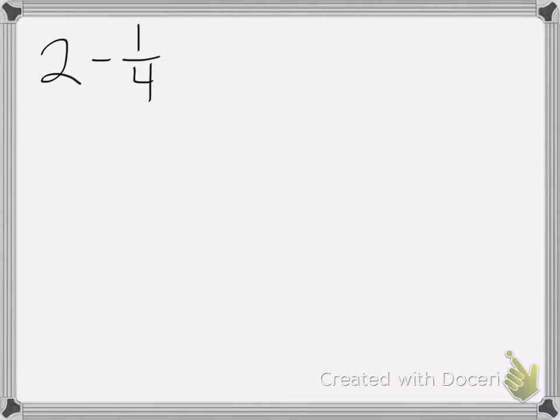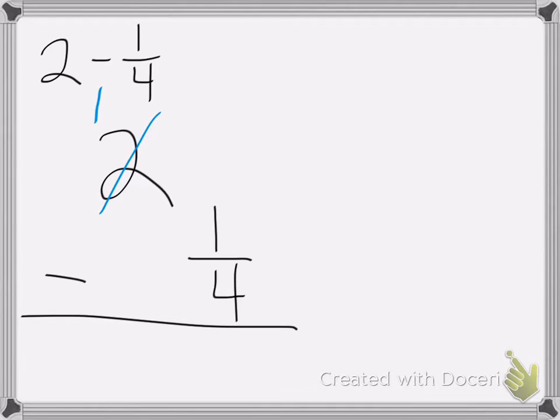This last one is one that only has a fraction and a whole number. So again, let's line it up. So we have 2 minus 1 half. Make sure to keep your place values in the correct spot. I don't have a fraction over here, so I'll need to borrow from the 2. 2 becomes a 1.